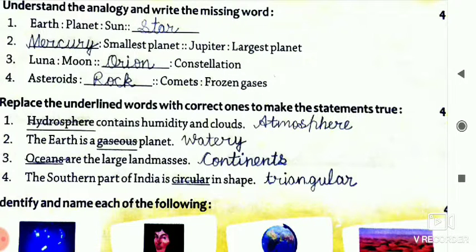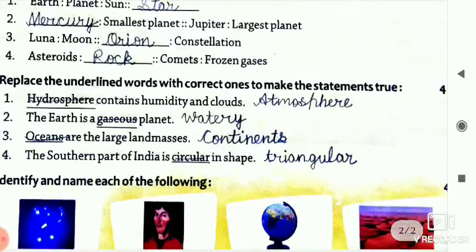Second is, the Earth is a gaseous planet. So gaseous is your wrong word. So your answer is, the Earth is a watery planet. Next, oceans are the large land masses. So here the ocean is a wrong word. So answer is, continents are the largest land masses.